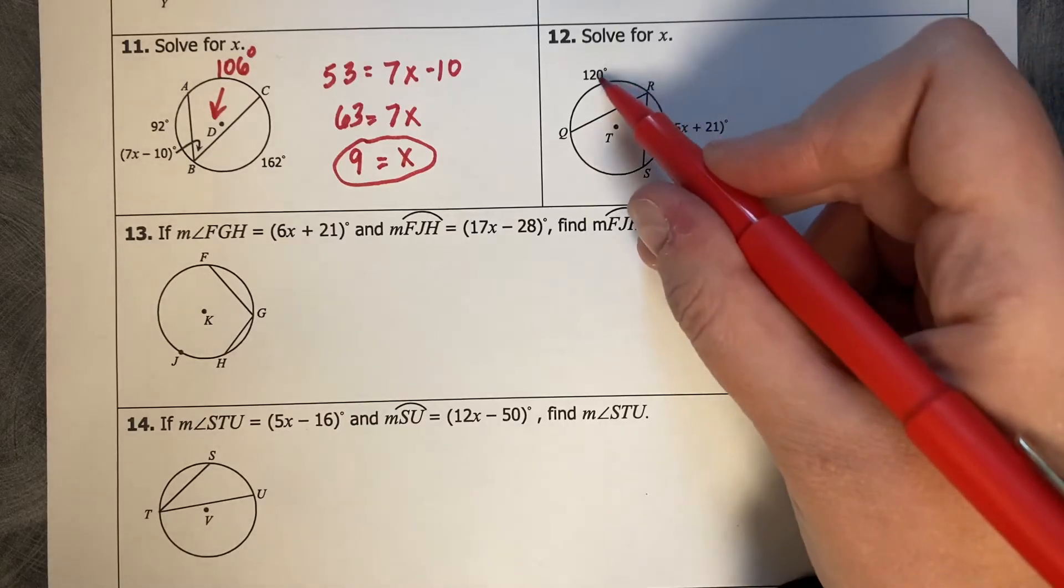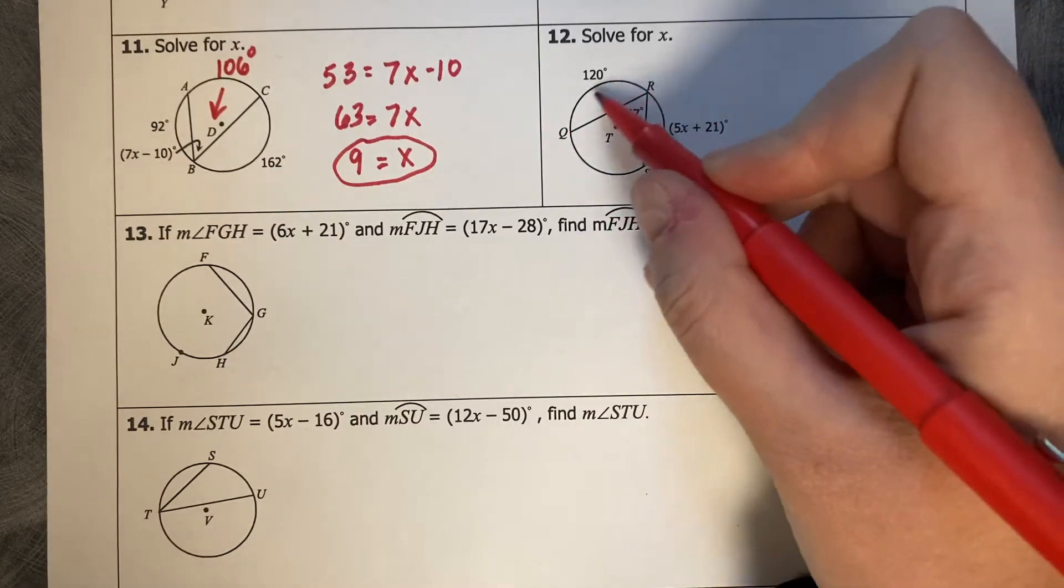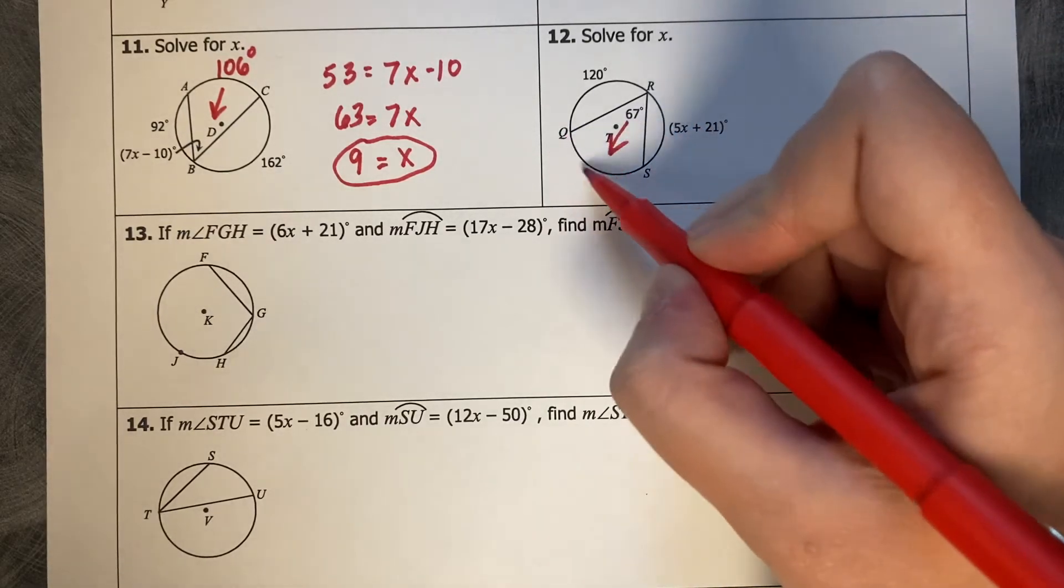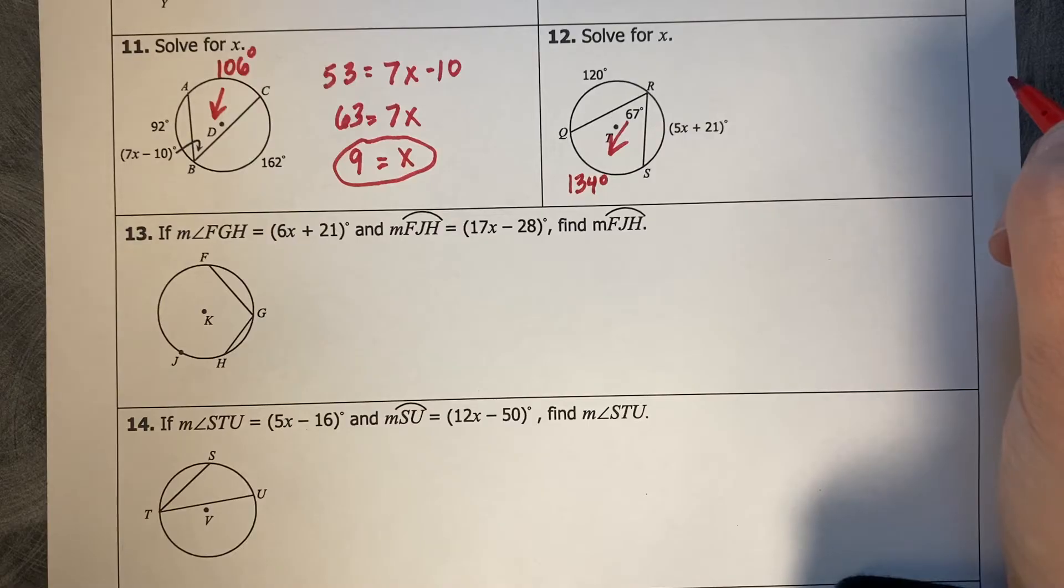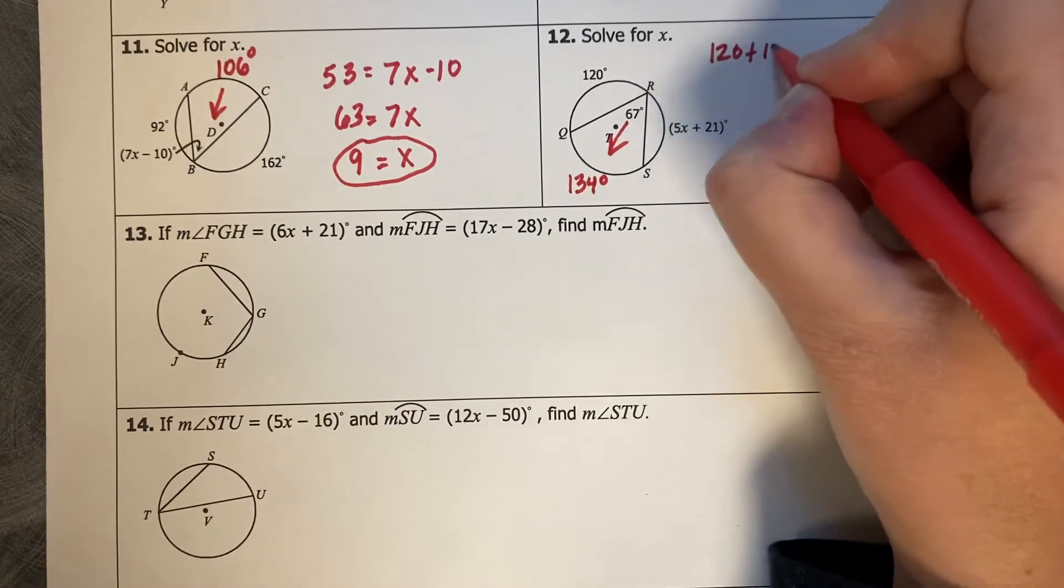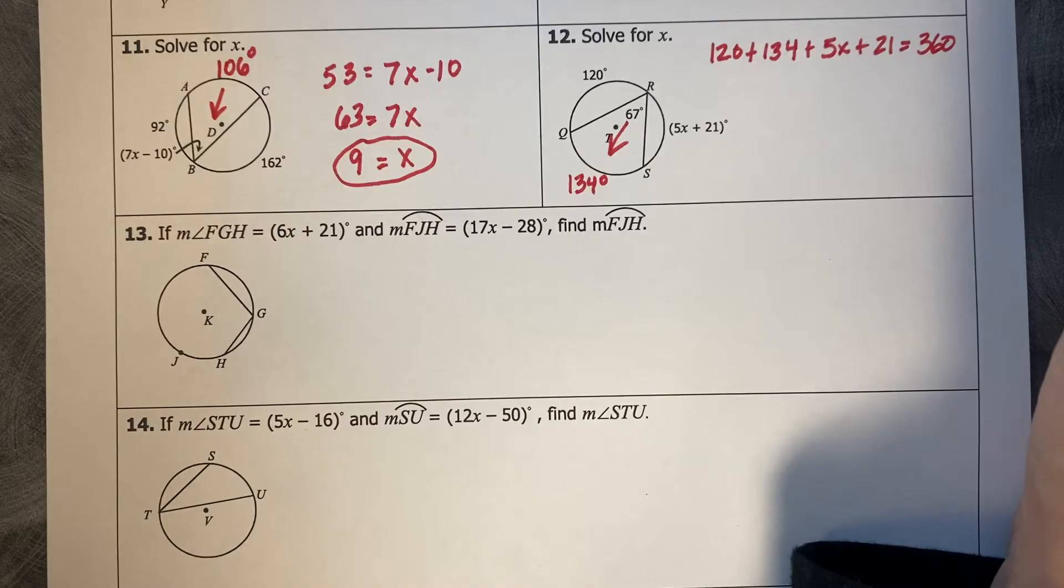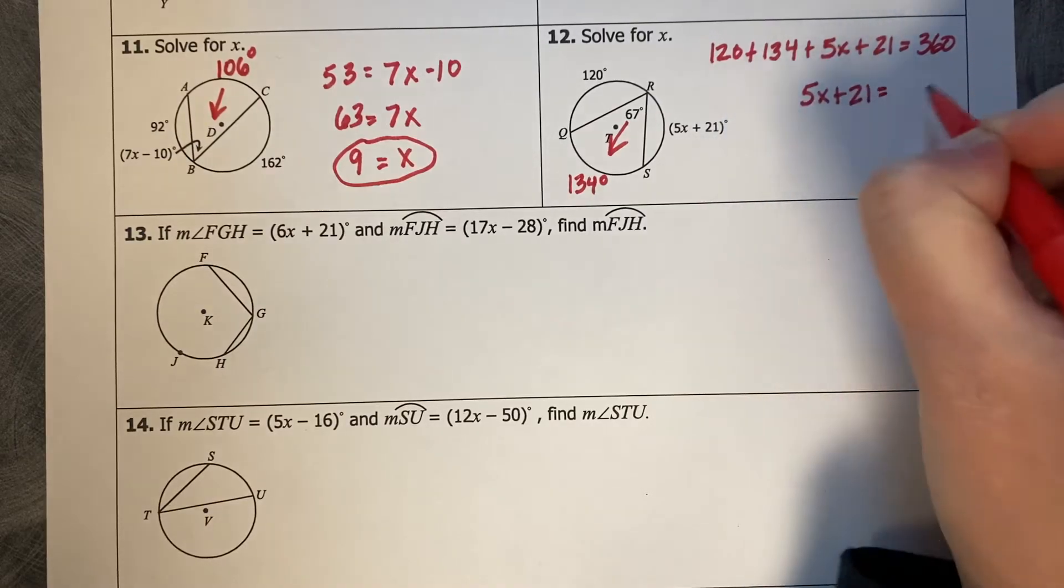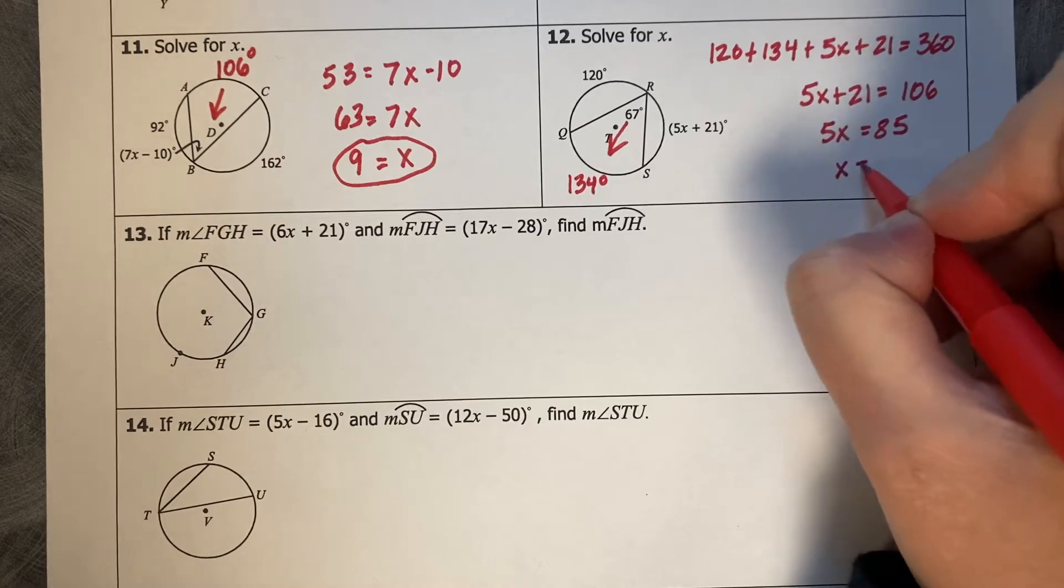Okay, so this one, I know an angle measure and an expression, and then this inscribed angle. So what I would like to do is use my 360 degree knowledge here, so I'm going to use my 67 and double it to get this QS arc measure, which is going to be 134 degrees. Then we're going to add all that up, so 120 plus 134 plus 5X plus 21 equals 360. Then if we combine those and subtract from 360, we're going to have 5X plus 21 equals 106, minus 21, 5X equals 85, divide by 5, and X equals 17.